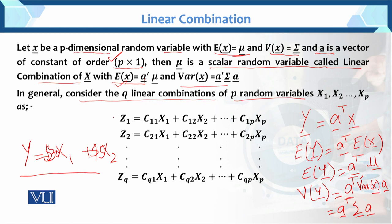Now here you have one linear combination z1, with constants c11 (suppose equals 3) and c12 (equals 2), multiplied by random variables x1 and x2 — just like the previous example with books and bags of chips — up to xp random variables with constant c1p. So basically what you will have is a vector.